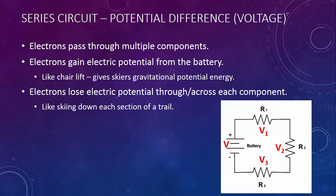This is like skiing down each section of a trail — you lose some gravitational potential energy on each section. This means that the sum of the potential differences at each component should equal the potential difference of the battery. For series circuits: V equals V1 plus V2 plus V3.